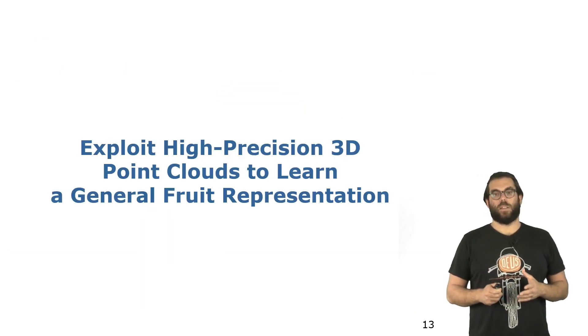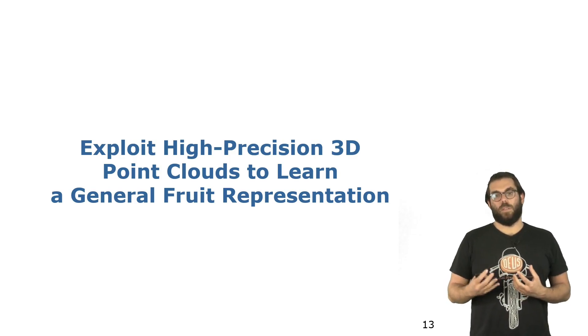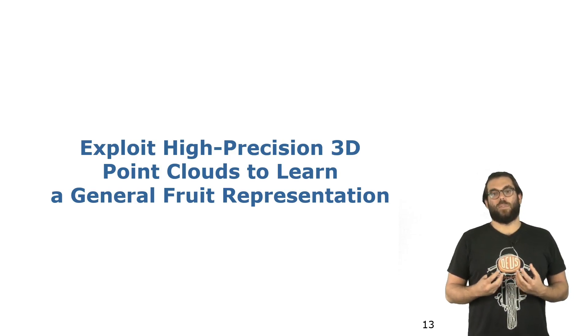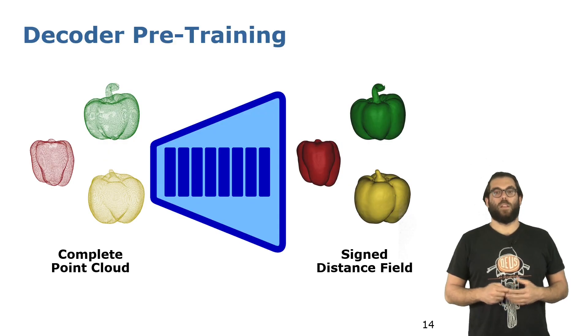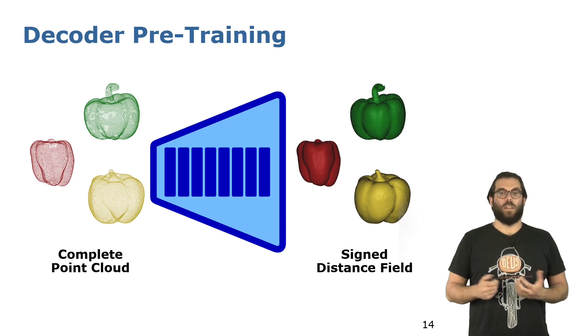Now the first question for us was, how can we exploit the 3D model to learn a general fruit representation. So we start by learning a simple decoder architecture, where the input is a 3D complete point cloud, and the output is a signed distance field representing that point cloud.